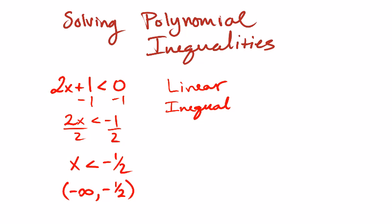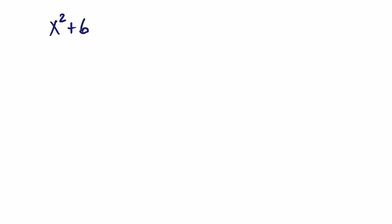If you have anything with a higher exponent than 1, you've got to do some extra work. You've got to actually find multiple sets, possibly, of where the inequality could be made true. By that higher exponent, I mean something like x squared plus 6x is greater than negative 8. Notice that you've got this power of 2, so it actually isn't solving it like normal.